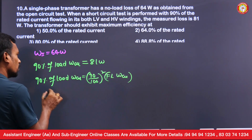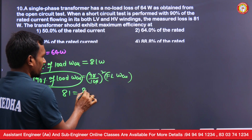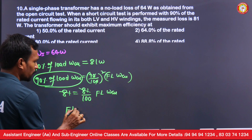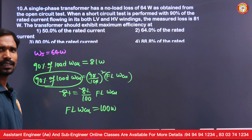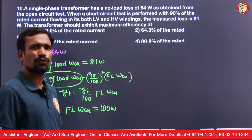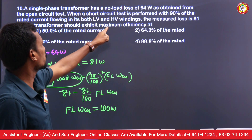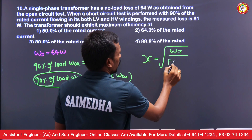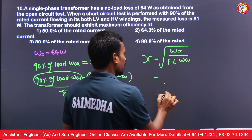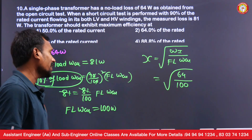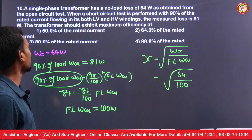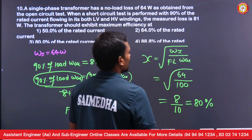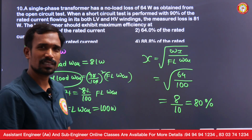From (0.9)²×full load copper loss = 81, we get full load copper loss = 81/(0.81) = 100 watts. Iron loss = 64 watts. Maximum efficiency occurs at load = √(iron loss / full load copper loss) = √(64/100) = 8/10 = 80% of full load.